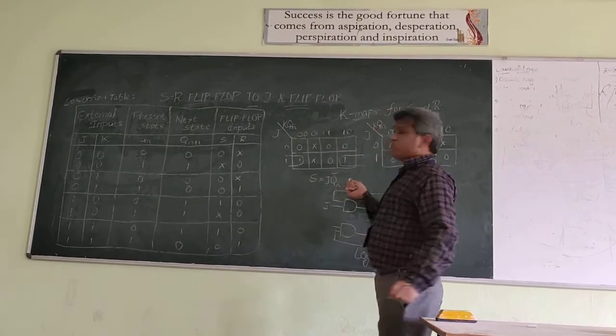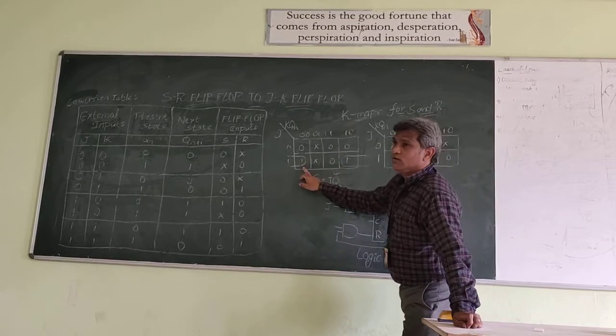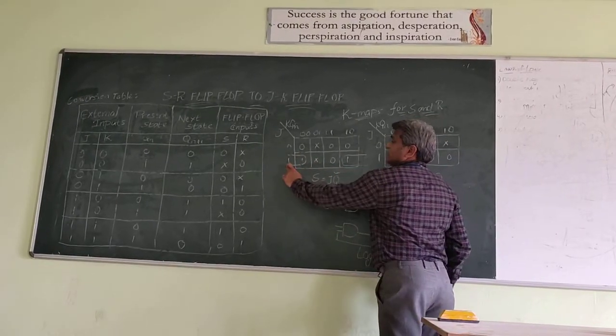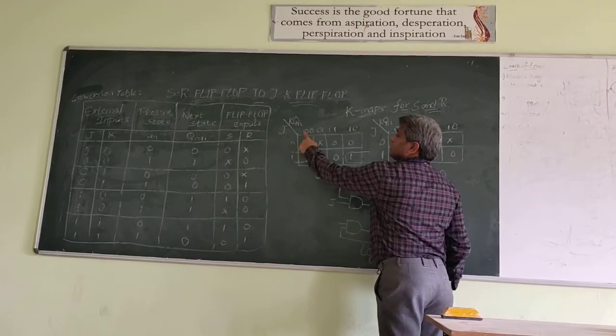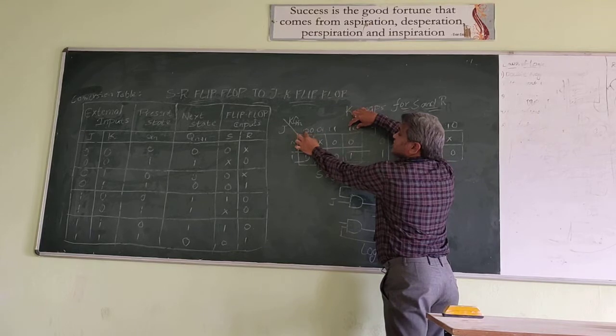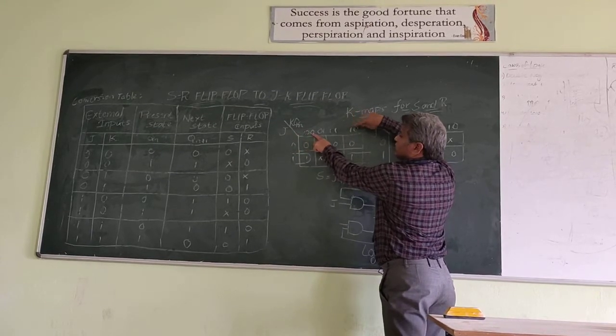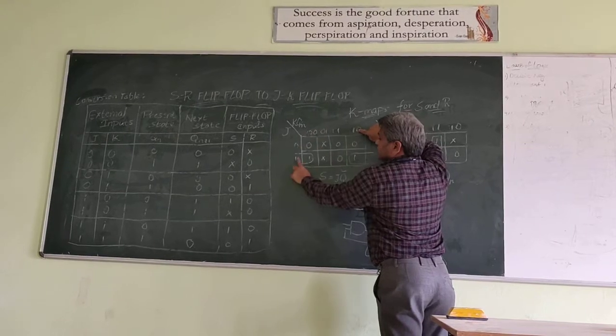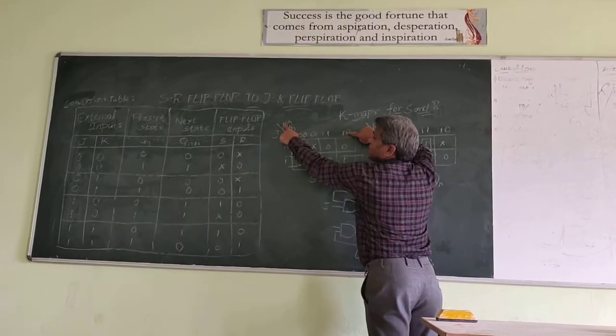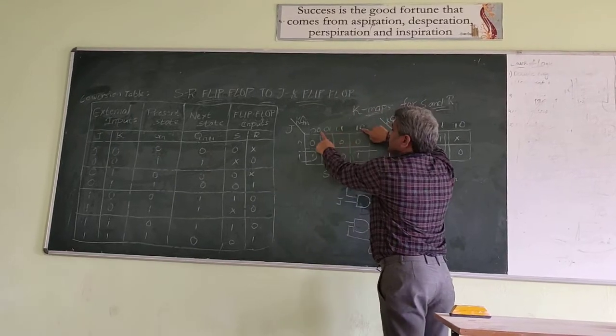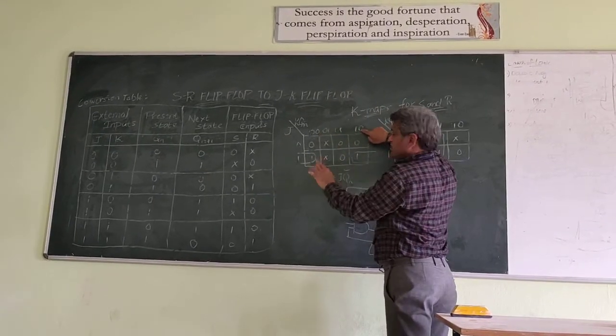Next, if you simplify it, here 1 and this is 1, so we can merge it. So what will happen? J is unchanged. Whereas, this conversion. In this one is unchanged. Unchanged is 0. That means, Qn bar. Qn is unchanged. This is meant for J. This is meant for K. This is meant for Qn. J is unchanged.